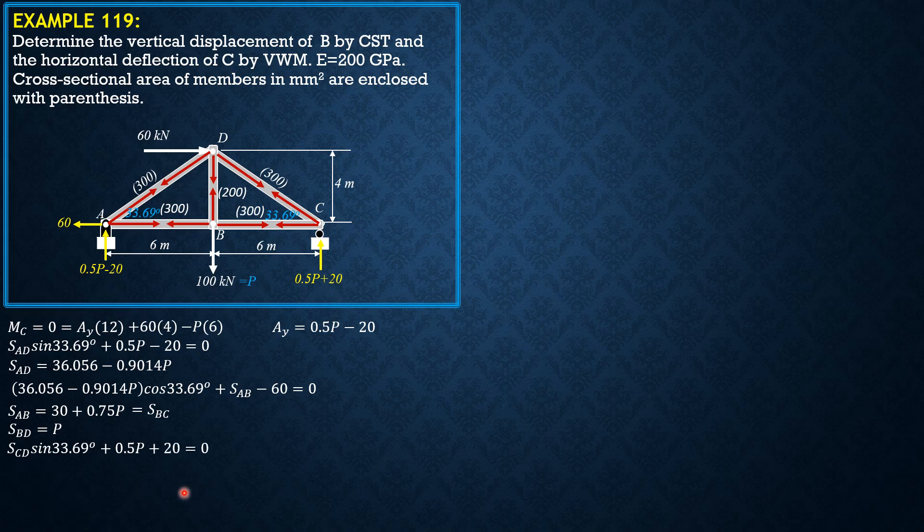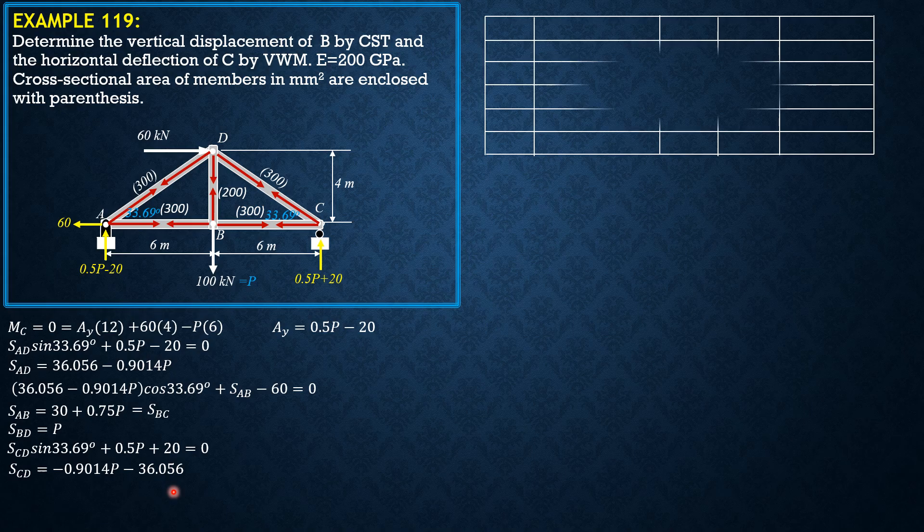Then let's tabulate the results. So here we have member, we have the member force S in kilonewtons, then here we have this is Castigliano, so partial of S with respect to P.